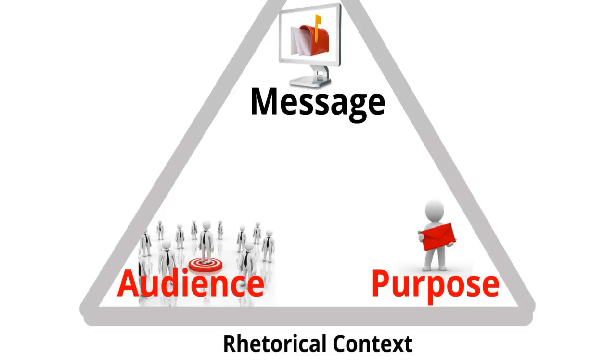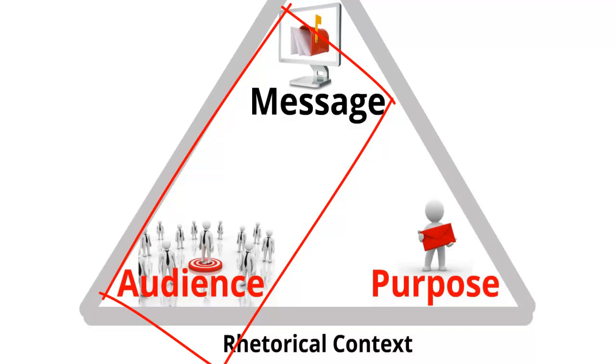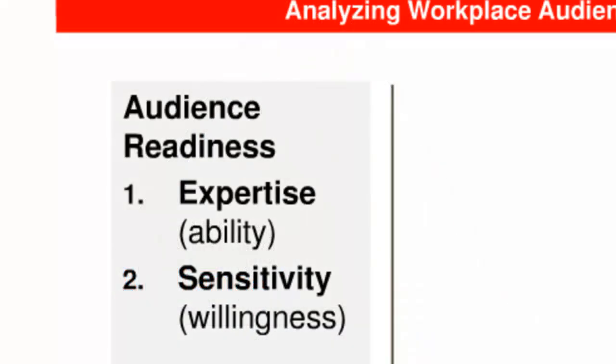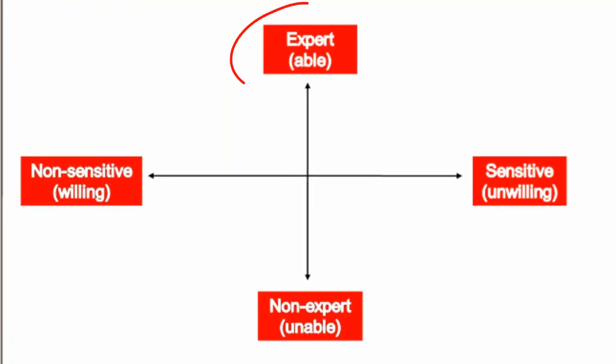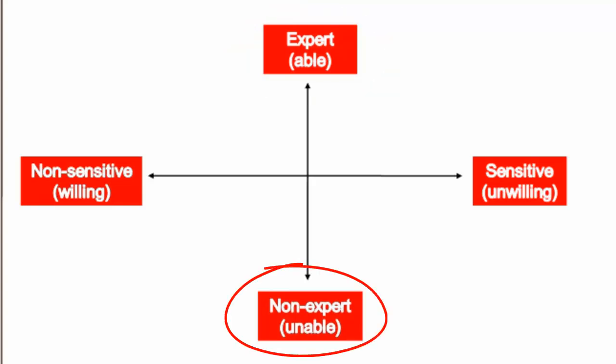The second aspect of analyzing a workplace audience focuses on the side of the rhetorical triangle connecting the audience and the message. Leadership research tells us that different individuals who receive the same message are not equally receptive to or ready to accept that message. A reader's readiness can be described by two traits: expertise and sensitivity. Experts are ready because they are able to accept the message, whereas those without expertise are unable.